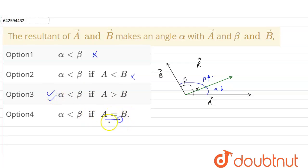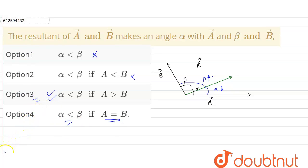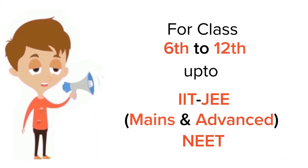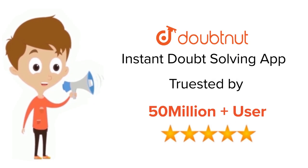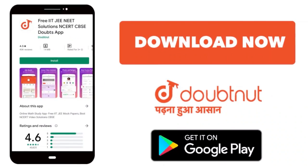When vector A equals vector B, alpha will equal beta. So the only correct option is option number three. Thank you. For class 6–12, IIT JEE, and NEET level, trusted by more than 5 crore students — download the DoubtNet app today.